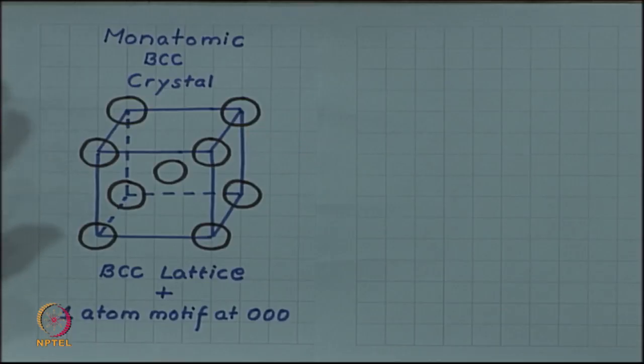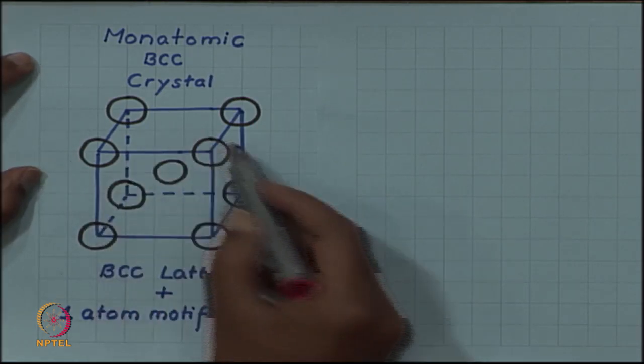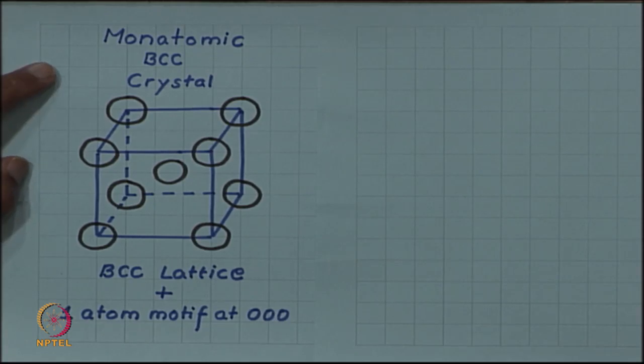It has lattice points at the corners and a lattice point at the center of the cube. But if we are saying monatomic BCC crystal or implying crystal by saying BCC, it should actually be a monatomic BCC crystal with one atom sitting at each lattice point. This is our BCC.